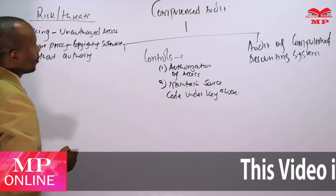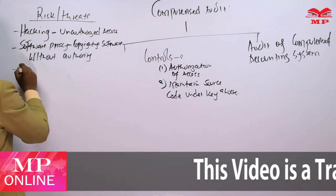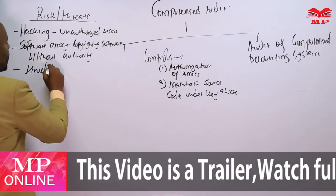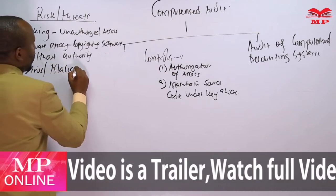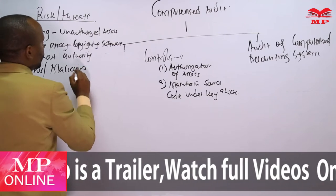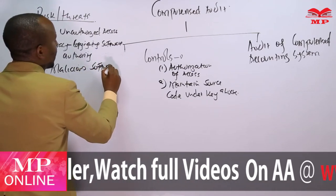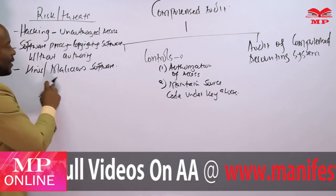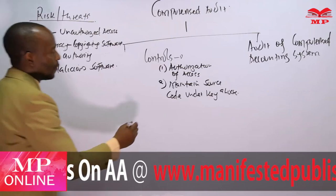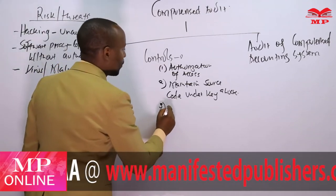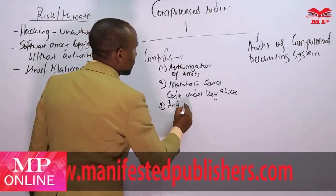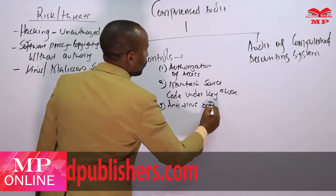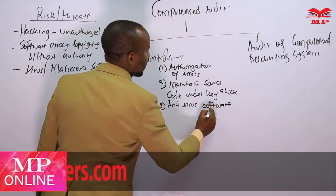There is also a problem called virus, or what we call malicious software — software that can destroy your data. If there is a virus that can destroy your data, that is a threat to your computer system. What do you do? You introduce antivirus software. Antivirus software can help you curb those particular cases — a good example is Kaspersky, and it works very well for computers.